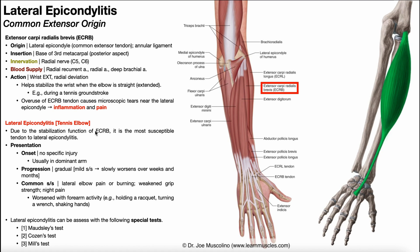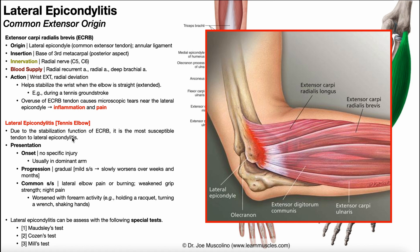Due to the stabilization function of ECRB, it is the most susceptible tendon to lateral epicondylitis. There are other muscles that originate off of the lateral epicondyle. Going a little bit proximally, this structure right here is the lateral supracondylar ridge. Originating off of that is extensor carpi radialis longus, or ECRL. This does not originate off of the lateral epicondyle, so it's not sharing that common extensor tendon and is very unlikely to be involved in lateral epicondylitis.